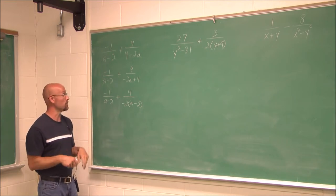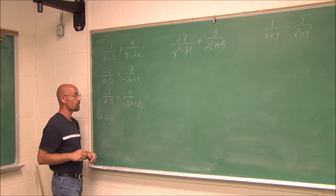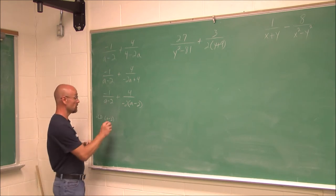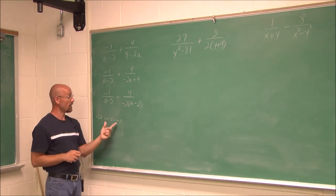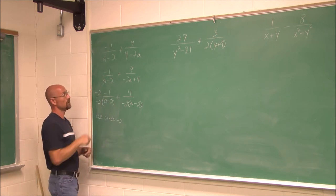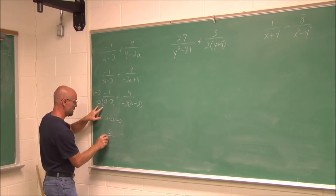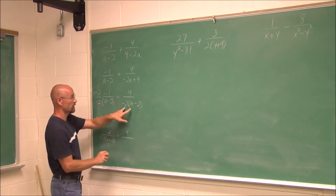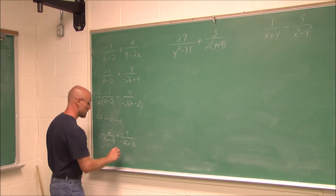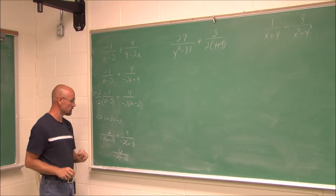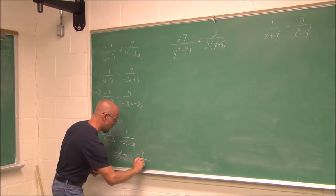Now assess the LCD. Both denominators contain the factor a minus 2, which is common. The factored denominator also has a factor of negative 2, which the other doesn't. So multiply the first fraction by negative 2 over negative 2. Negative 2 times negative 1 is positive 2. Combining numerators: 2 plus 4 is 6 over negative 2 times the quantity a minus 2. Reducing: 6 divided by negative 2 is negative 3, giving negative 3 over a minus 2. We bring the negative to the numerator rather than leaving it in the denominator.